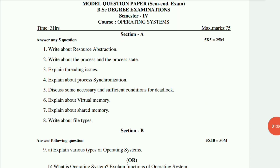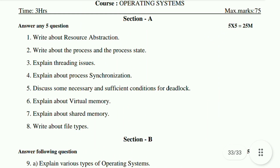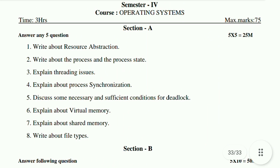This is the model question paper for fourth semester Operating System. Short questions: First - write about resource abstraction. Second - write about the process and process state. Third - explain threading issues. Fourth - explain about process synchronization. Fifth - discuss necessary and sufficient conditions for deadlock. Sixth - explain about virtual memory. Seventh - explain about shared memory. Eighth - write about file types.